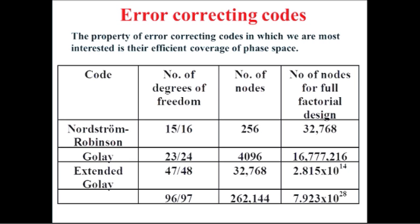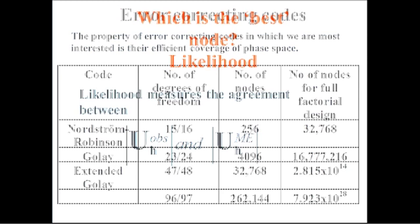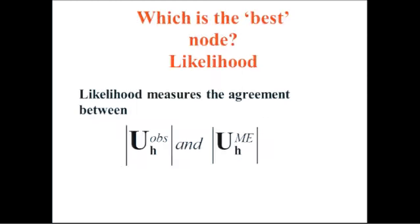So those are the two. There are extended Goley codes and all sorts of things you can do. If you use the Nordstrom-Robinson code and you get a pile of reflections and you maximize the entropy of each one, you've then got 256 solutions to look at.